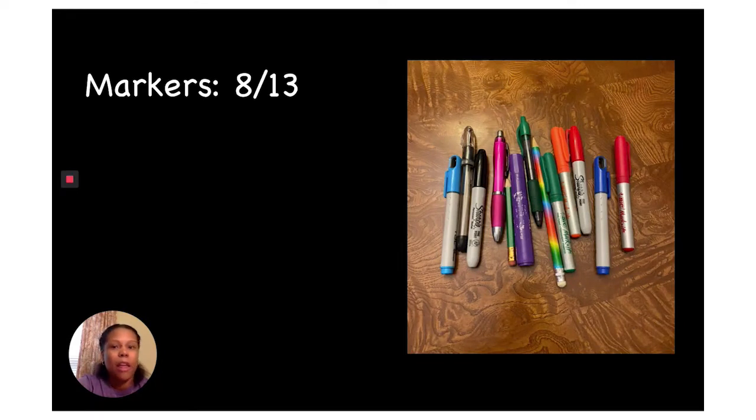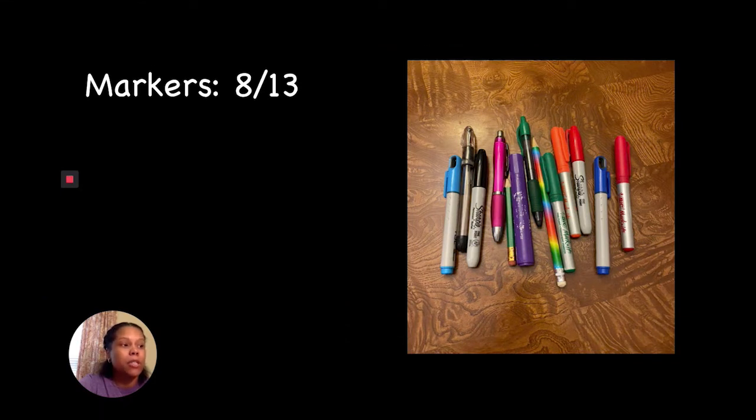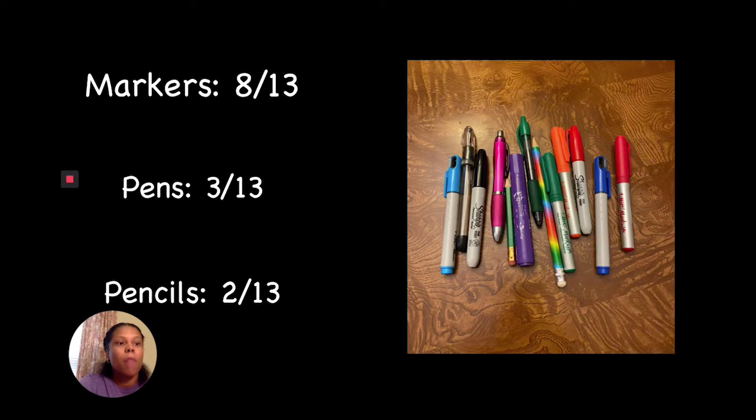So which one do you think is less likely to be chosen? Let's see what happens when I choose again. Another marker. Well, you can see I chose yet another marker. I did not choose a pen or pencil, so both of those are unlikely to be chosen. The chances to choose a pen are 3 thirteenths and the chances to choose a pencil are 2 thirteenths.